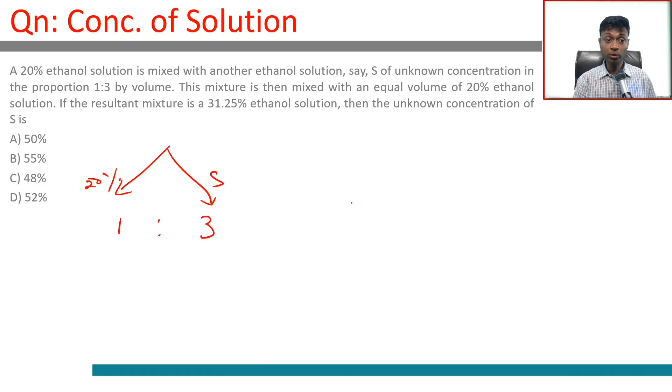an equal volume of 20% ethanol solution. So this mixture is mixed with 20% ethanol in the ratio 1 is to 1. The resultant mixture is 31.25% ethanol. So the resultant mixture is 31.25% and it's a wonderful question because some mathematical intuition is very useful in this.